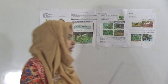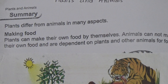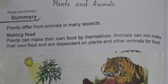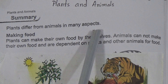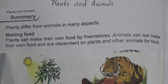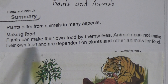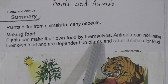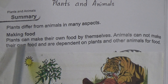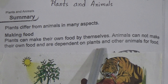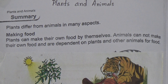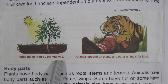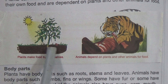Chapter 2: Plants and Animals. Plants differ from animals in many aspects. Making food: plants can make their own food by themselves. Animals cannot make their own food and are dependent on plants and other animals for food. You can see here is a picture of plants — plants make food by themselves. They receive sunlight to make their food.